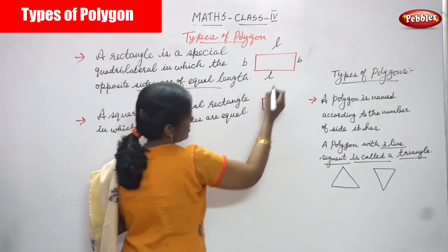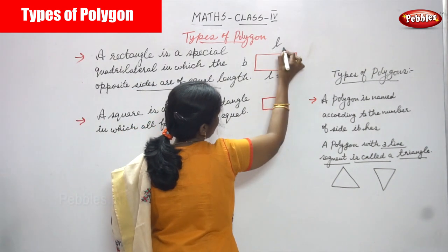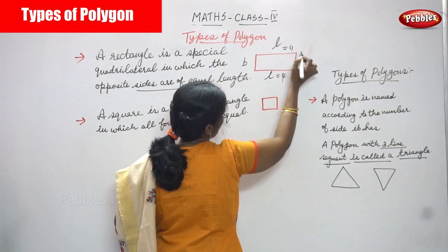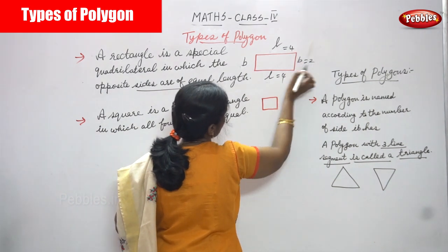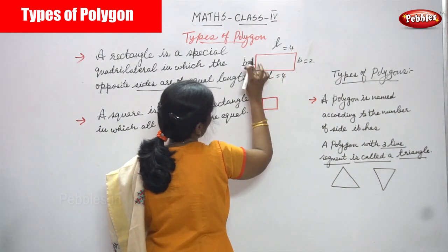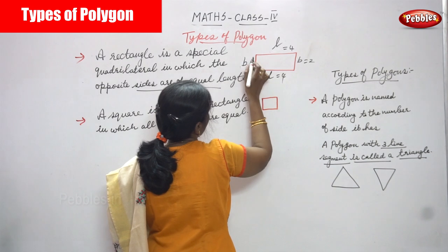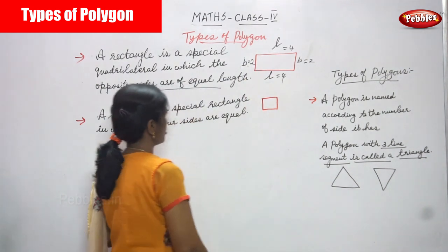For example, this side is four centimetres, which means the opposite side is also four centimetres. And this side is two centimetres, which means the opposite side is also two centimetres.